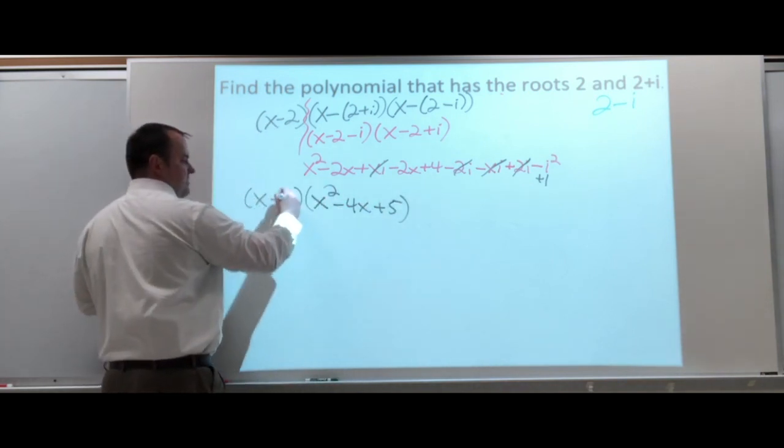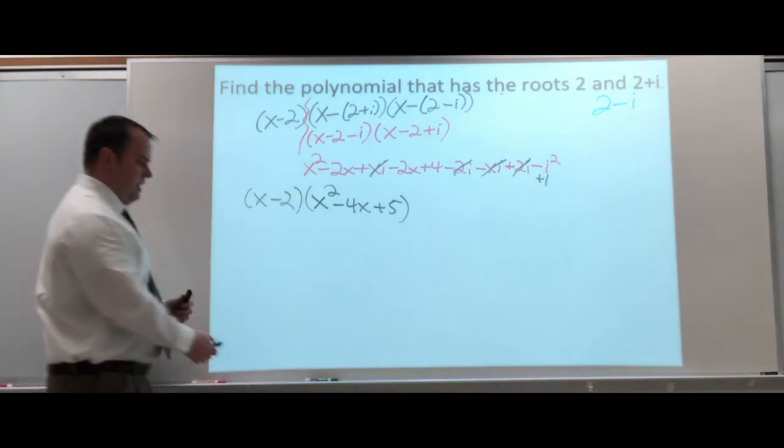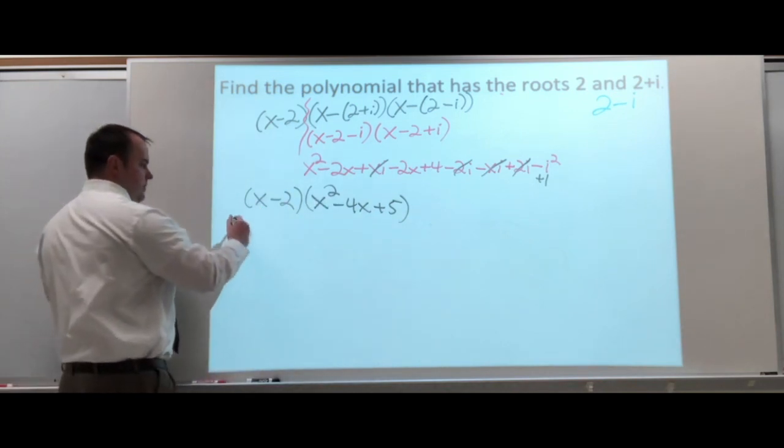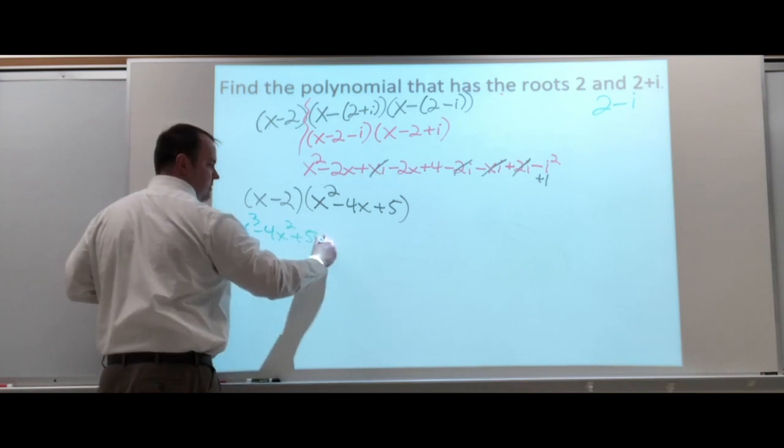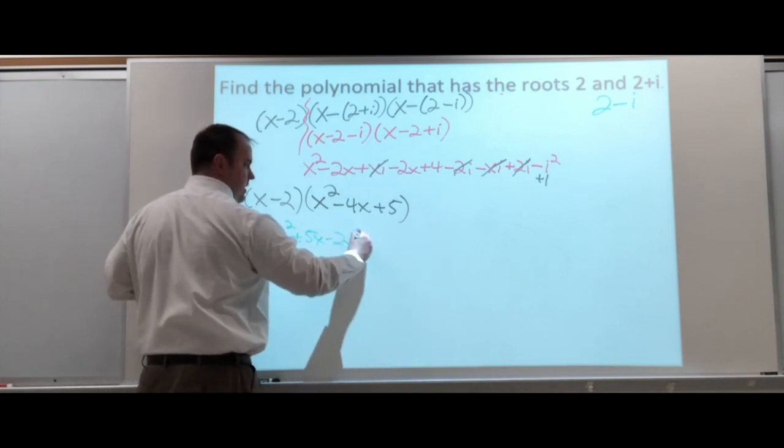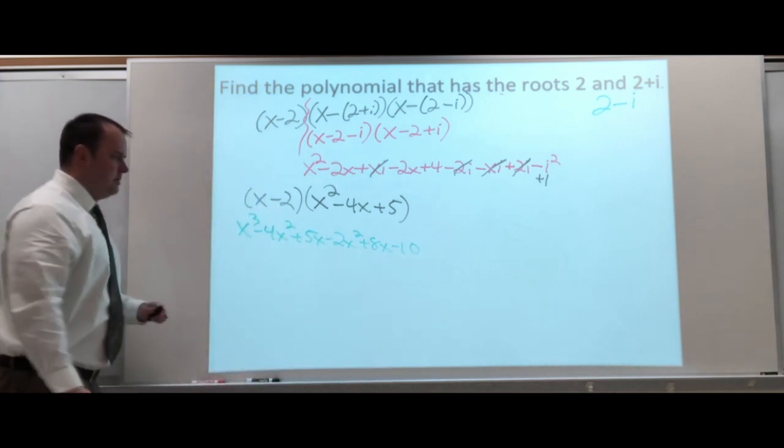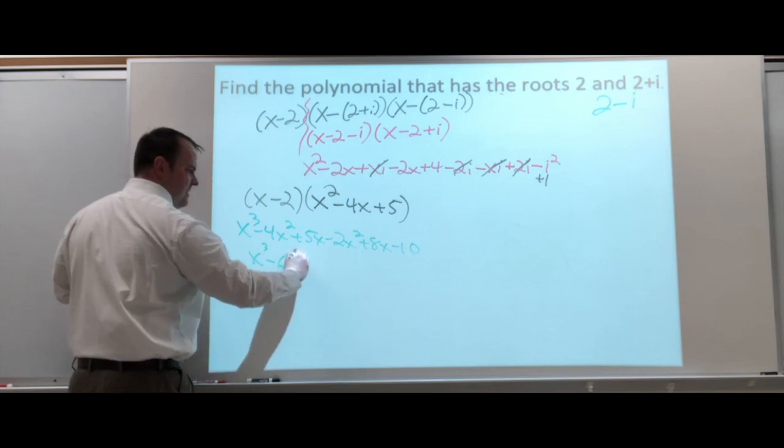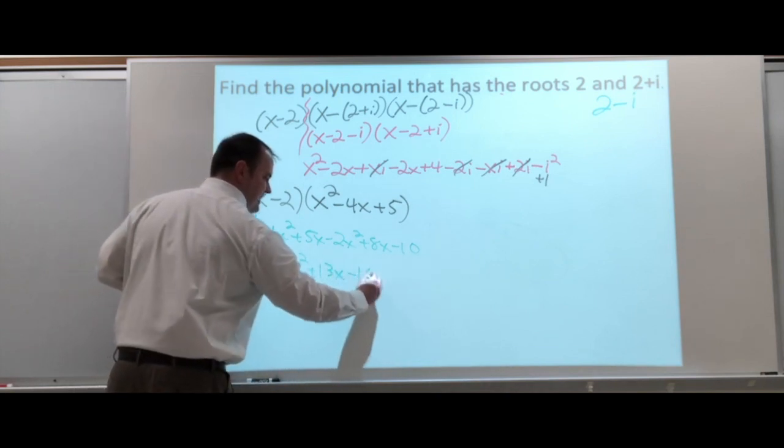Bring down my x minus 2. All the i's cancel out or simplify. Just like I said would happen. And now, we just have to multiply through that binomial. x cubed minus 4x squared plus 5x minus 2x squared plus 8x minus 10. Simplify some things. x cubed minus 6x squared plus 13x minus 10.